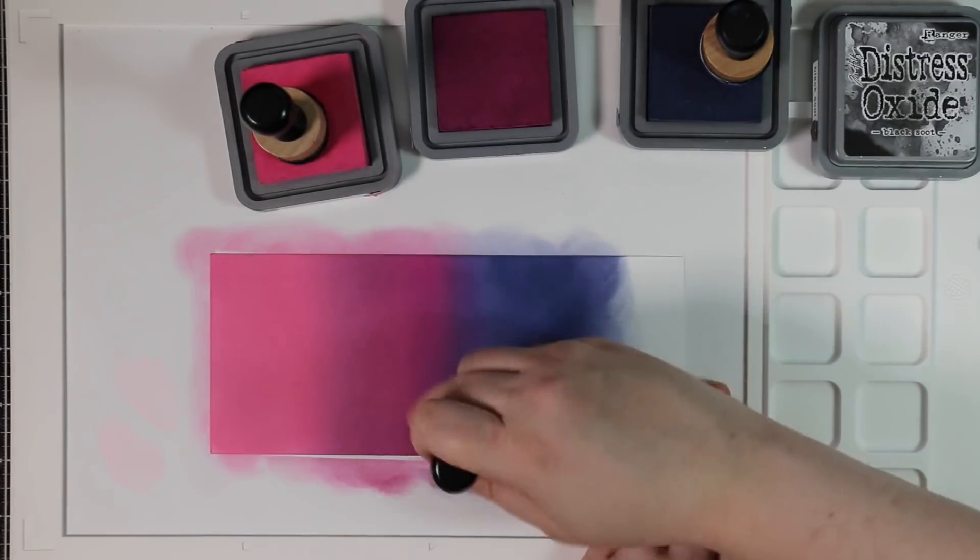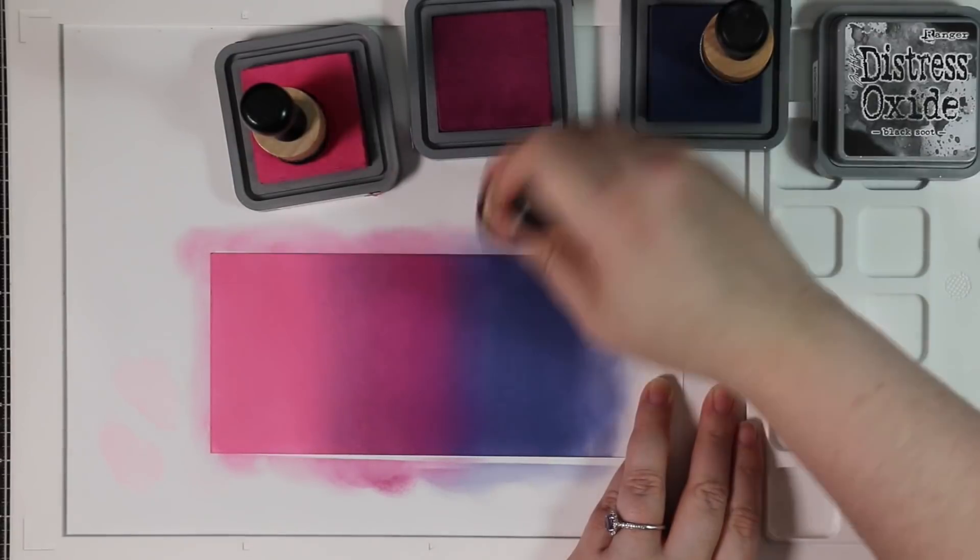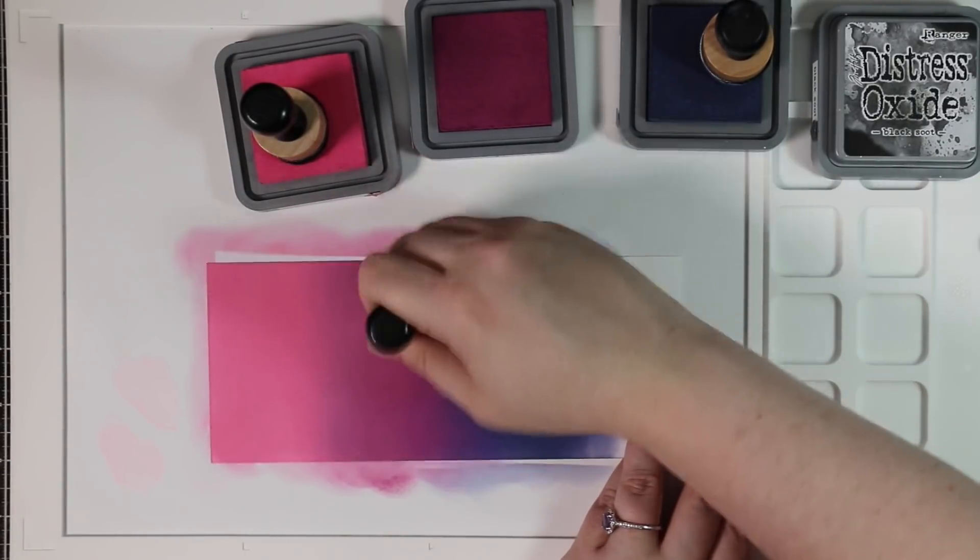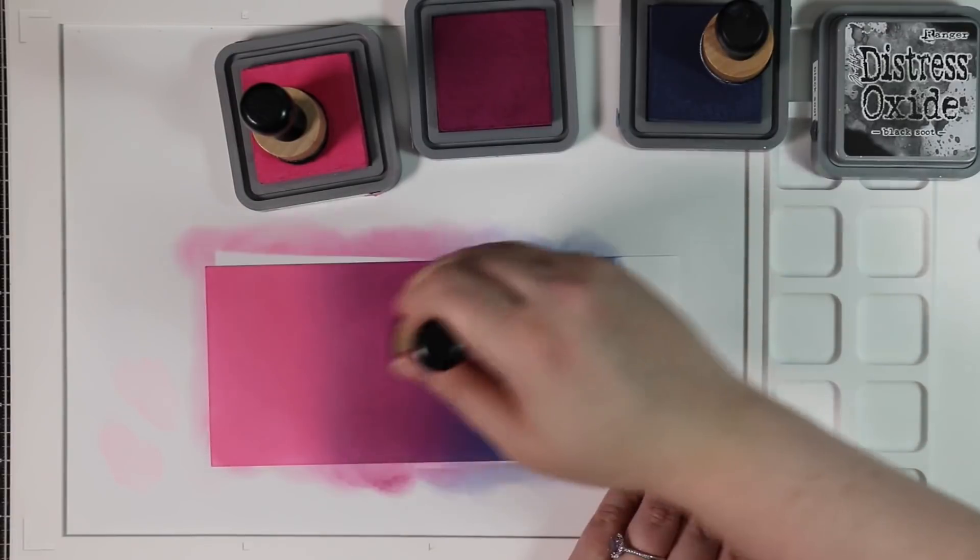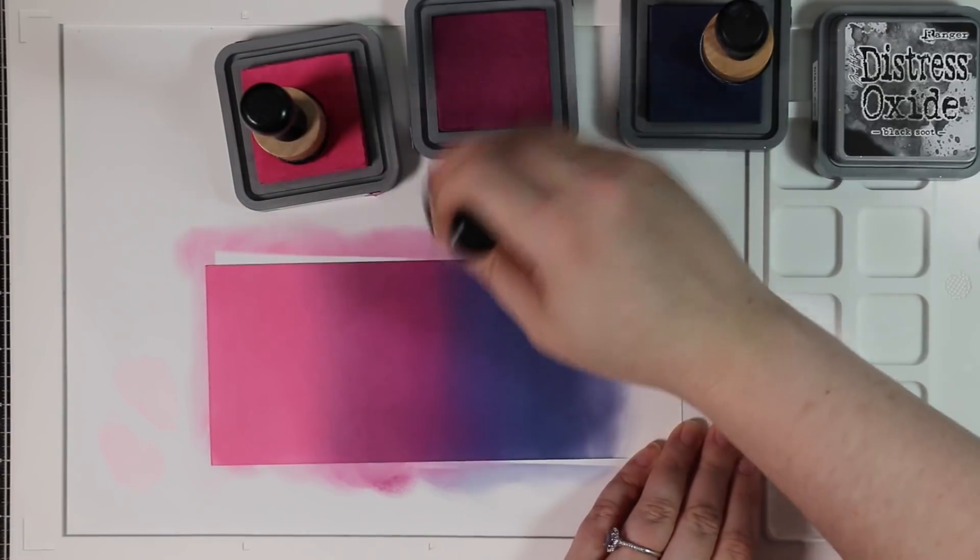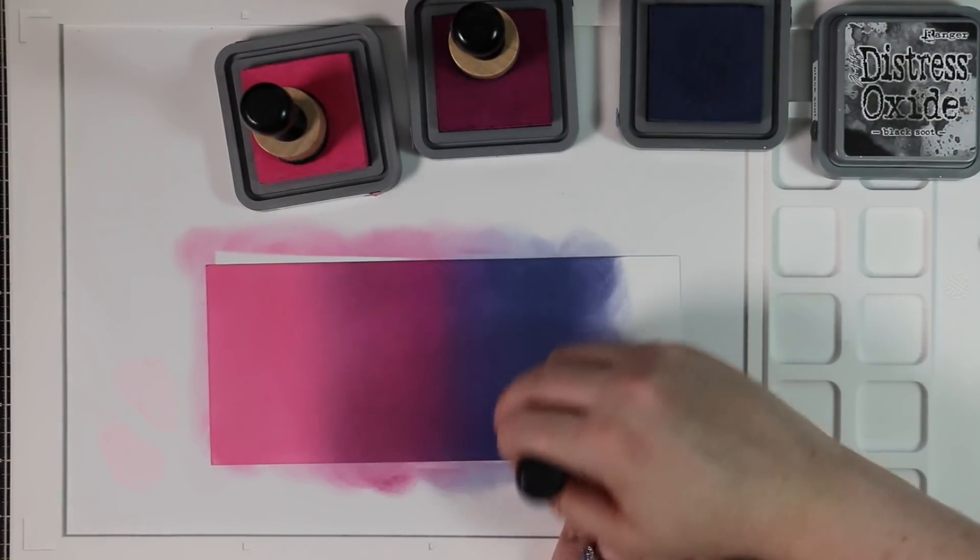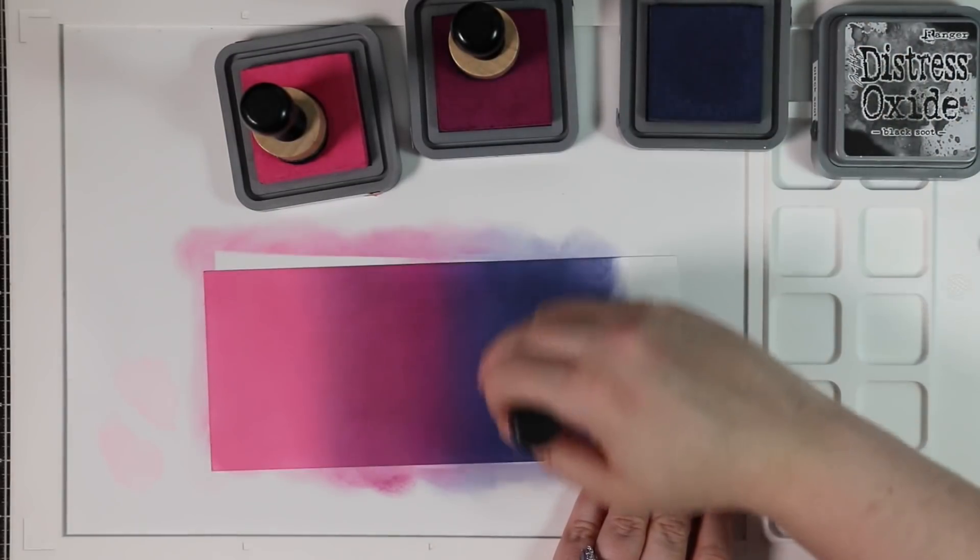And then using those blending foams and this cardstock with oxide inks is just perfect. When it comes to dye inks, my regular Distress inks or other dye-based inks, I prefer blending brushes. But for oxides, this is how I get the best blends. And it just lays down like butter. The only thing I need to remember to do is to take the Chipped Sapphire there. I need to re-ink that one. I've been using that a lot the last couple of months.